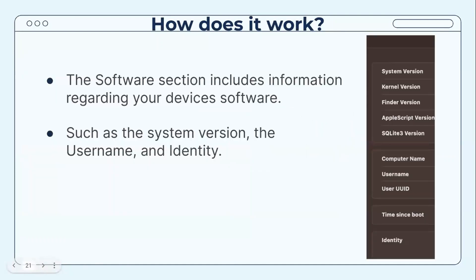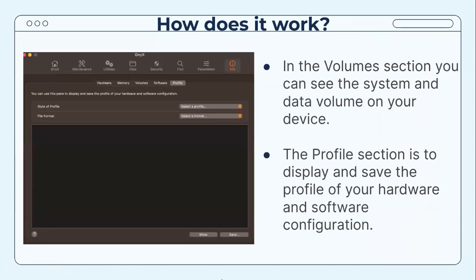The Software section includes information regarding your device's software, such as the system version, username, and identity. In the Volume section, you can see the system and data volumes on your device. The Profile section is used to display and save the profile of your hardware and software configuration.